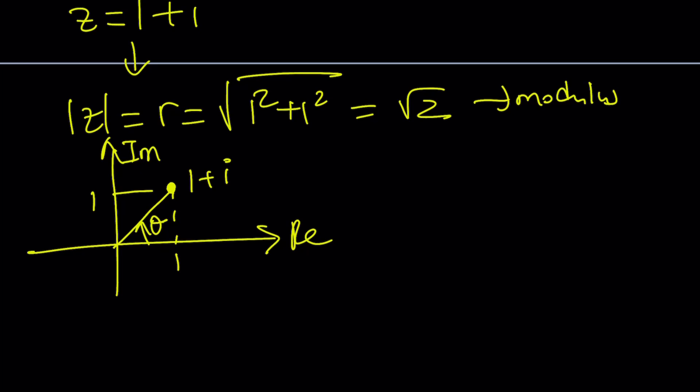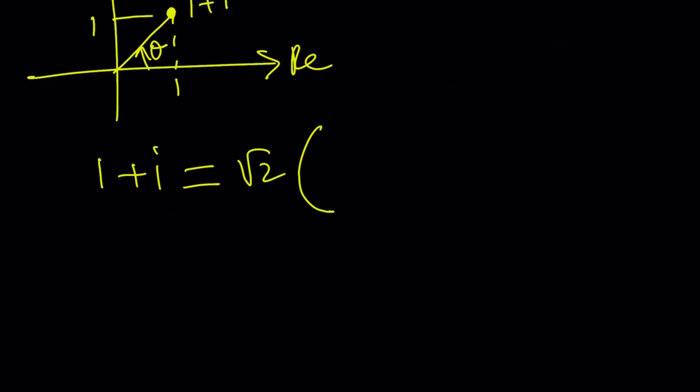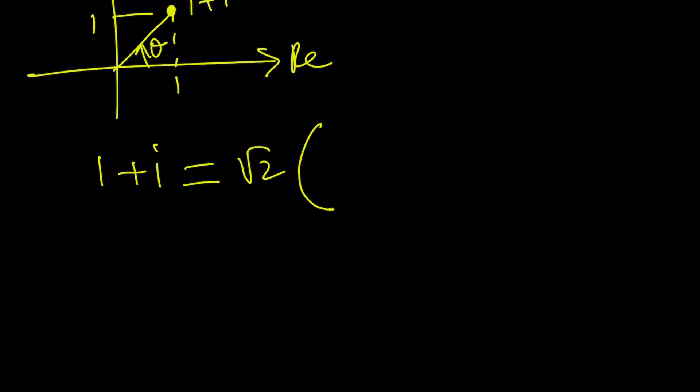So this allows us to write our number in this form, which is r times e to the power i theta. r is the modulus, remember that. So 1 plus i can be written as root 2. I'm sorry, I'm ahead of myself. We take out the r, and then inside, since we have to have 1, this becomes 1 over root 2, and this becomes 1 over root 2, and multiply by i.